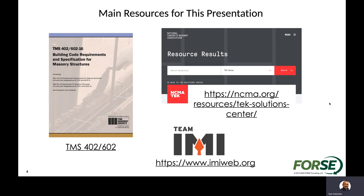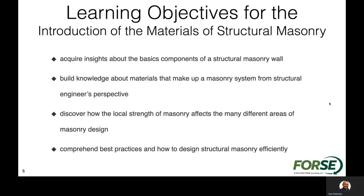For this presentation, we relied on several different resources for defining masonry materials, leaning heavily on TMS 402/602, the current 2016 code, as well as the NCMA tech guides and other resources on IMIweb. The learning objectives are to acquire insights about the basic components of structural masonry and build knowledge about different materials so we can vary them for different types of designs to make highly efficient masonry. We'll also look at the local strength of masonry and best practices for designing structural masonry more efficiently.